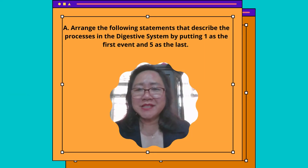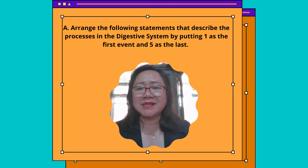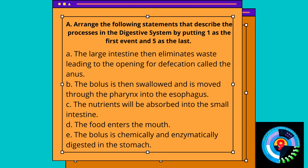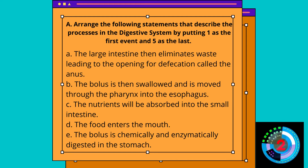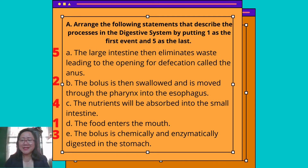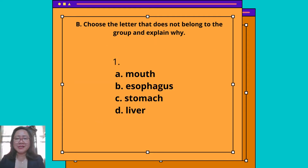Let's analyze the digestive system. Arrange the following statements that describe the processes in the digestive system by putting 1 as the first event and 5 as the last. Answer: D as number 1, B as number 2, E as number 3, C as number 4, and A as number 5.